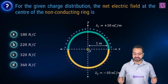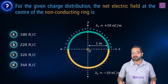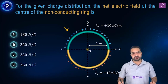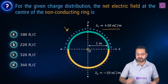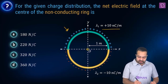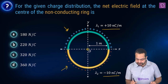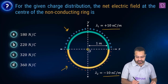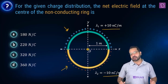For the given charge distribution, the net electric field at the center of the non-conducting ring is to be found. We have a charged ring where the top half is positively charged with a charge density of 10 nanocoulombs per meter, and the bottom half is negatively charged with the same charge density. We need to find the electric field at the center.